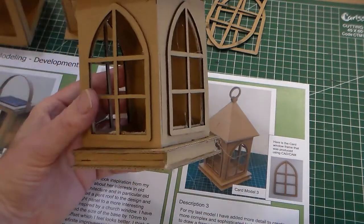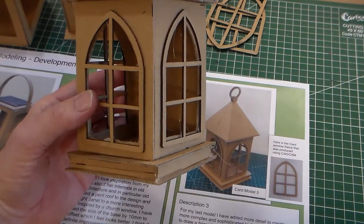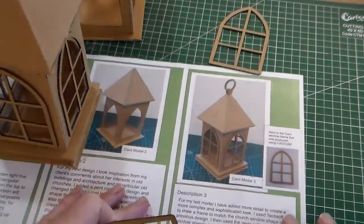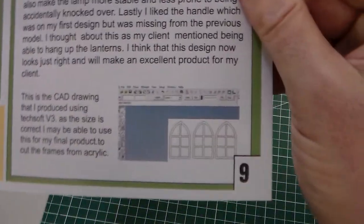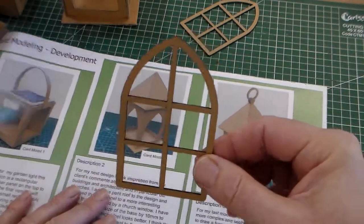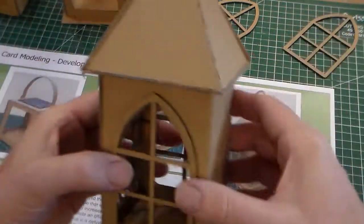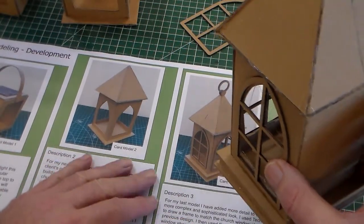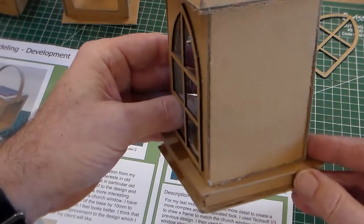For my last model, I've added more details to create a more complex and sophisticated look. I used Texoff V3 to draw a frame to match the church window shape — you can just see that here. I've used Texoff to design this window shape and cut it out with a laser. We've cut out this window frame and placed it on, which gives more complexity. I then used the laser cutter to cut out the window shapes. I also made the base thicker, which will make the lamp more stable and less prone to falling over.